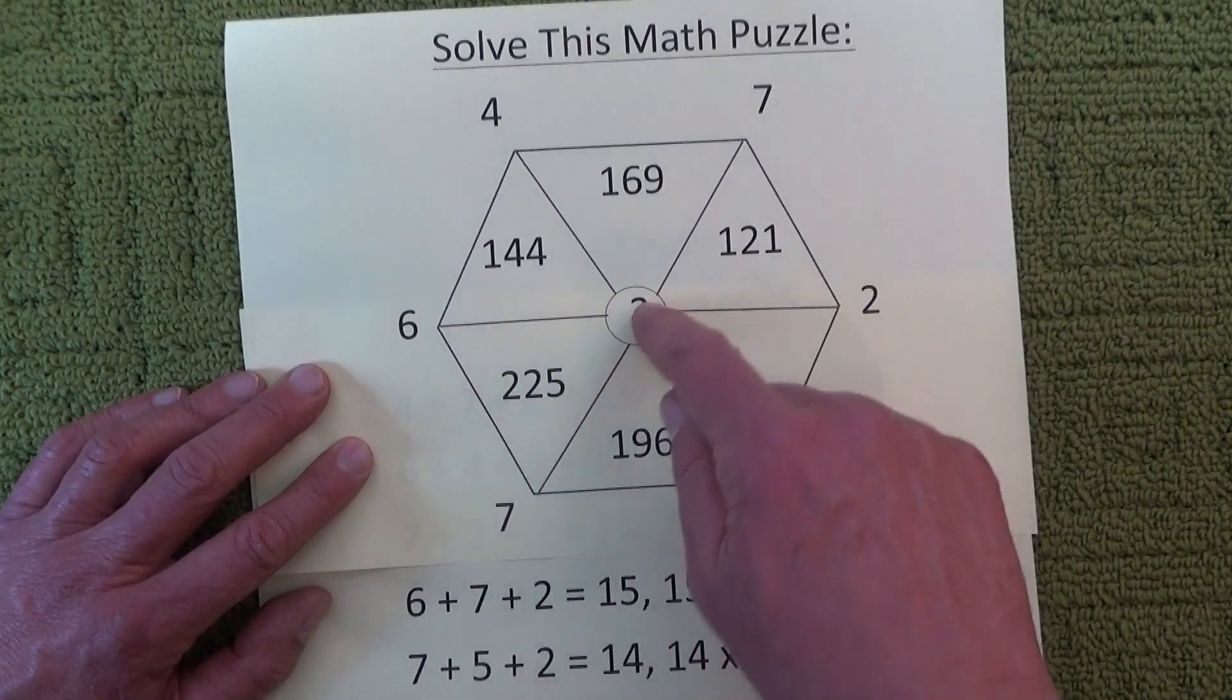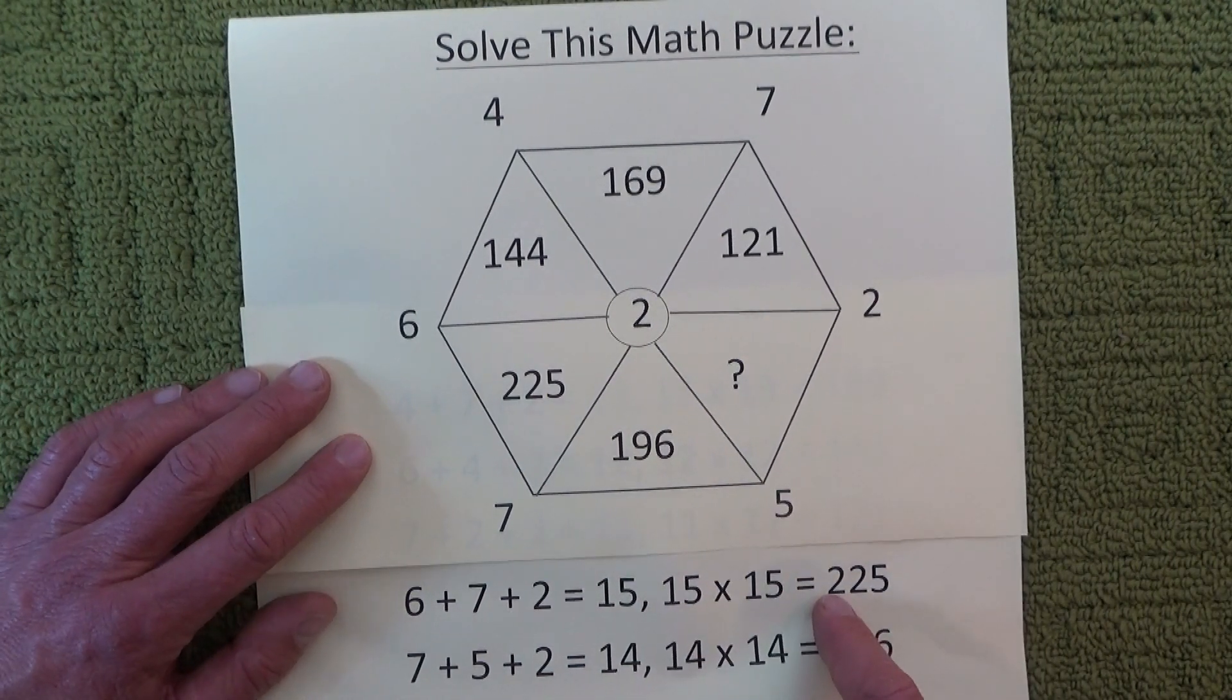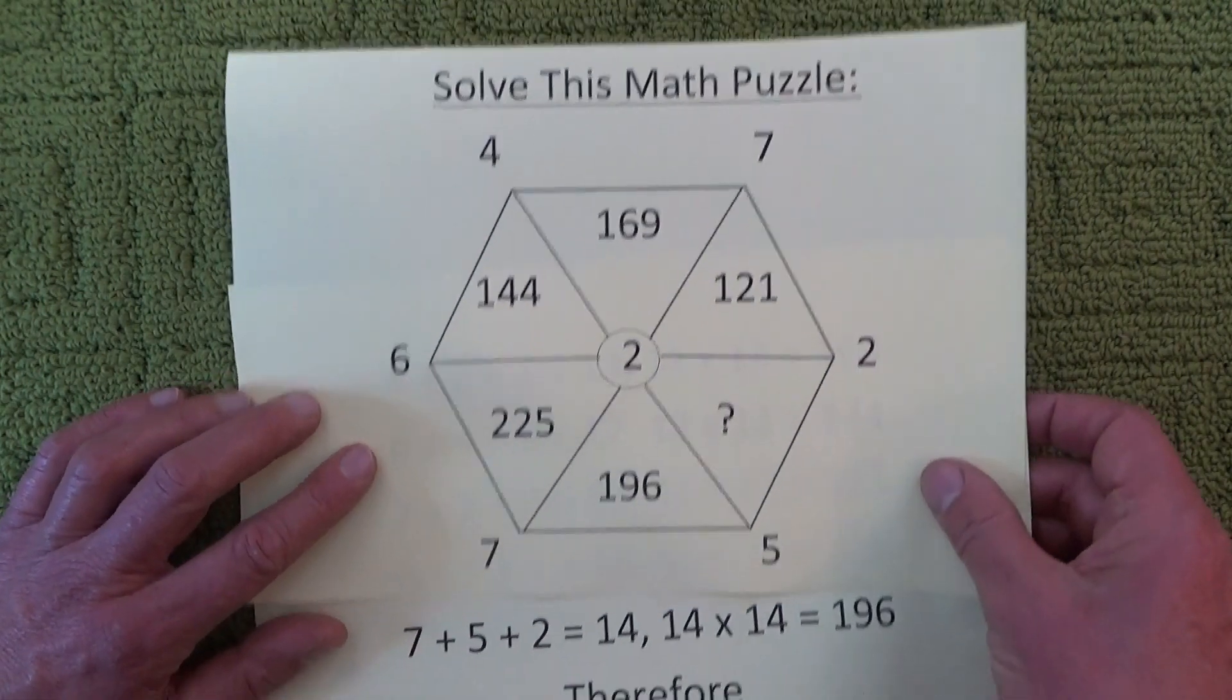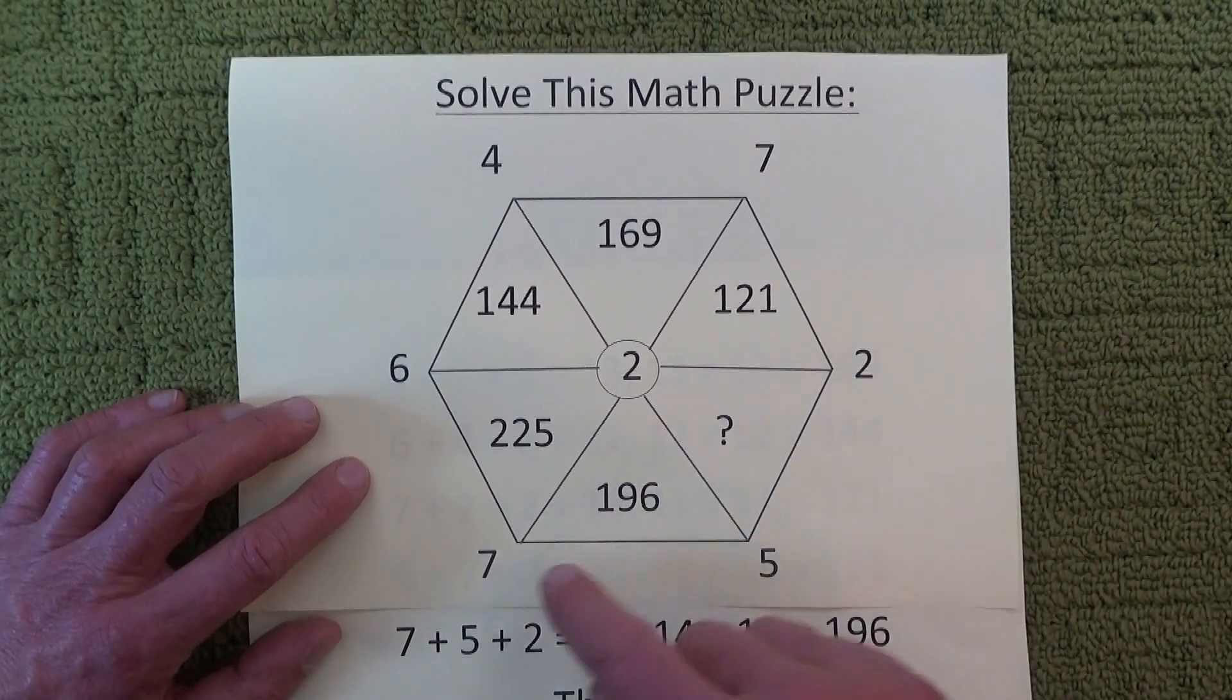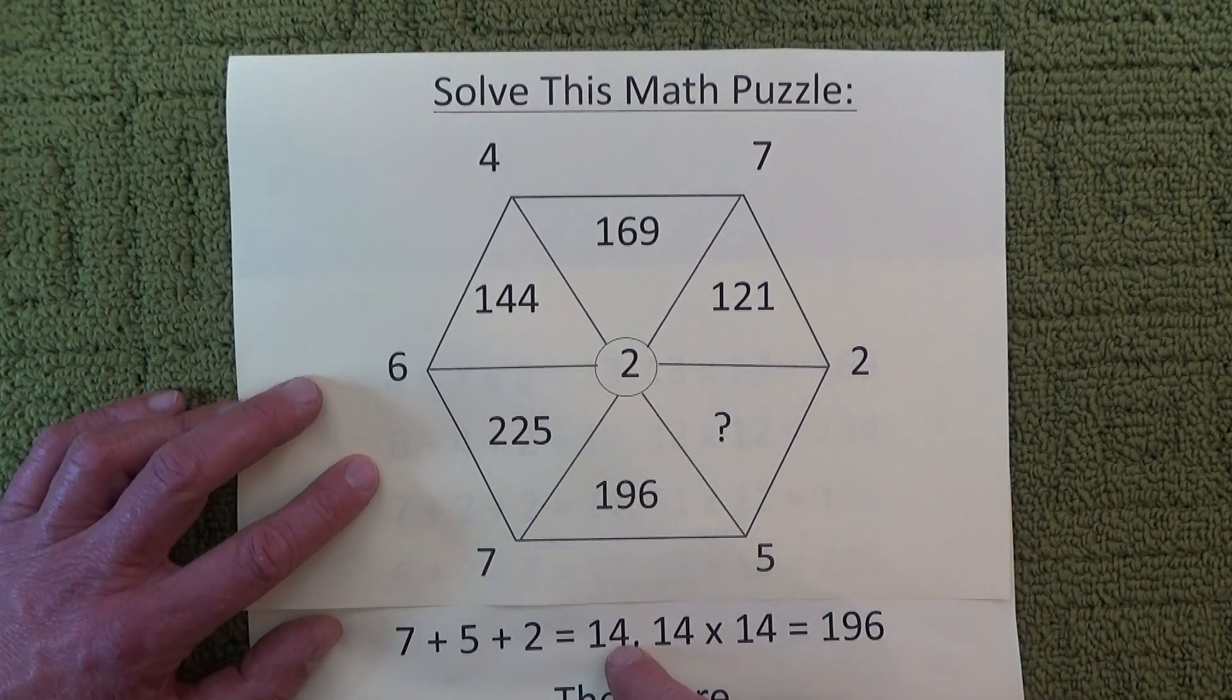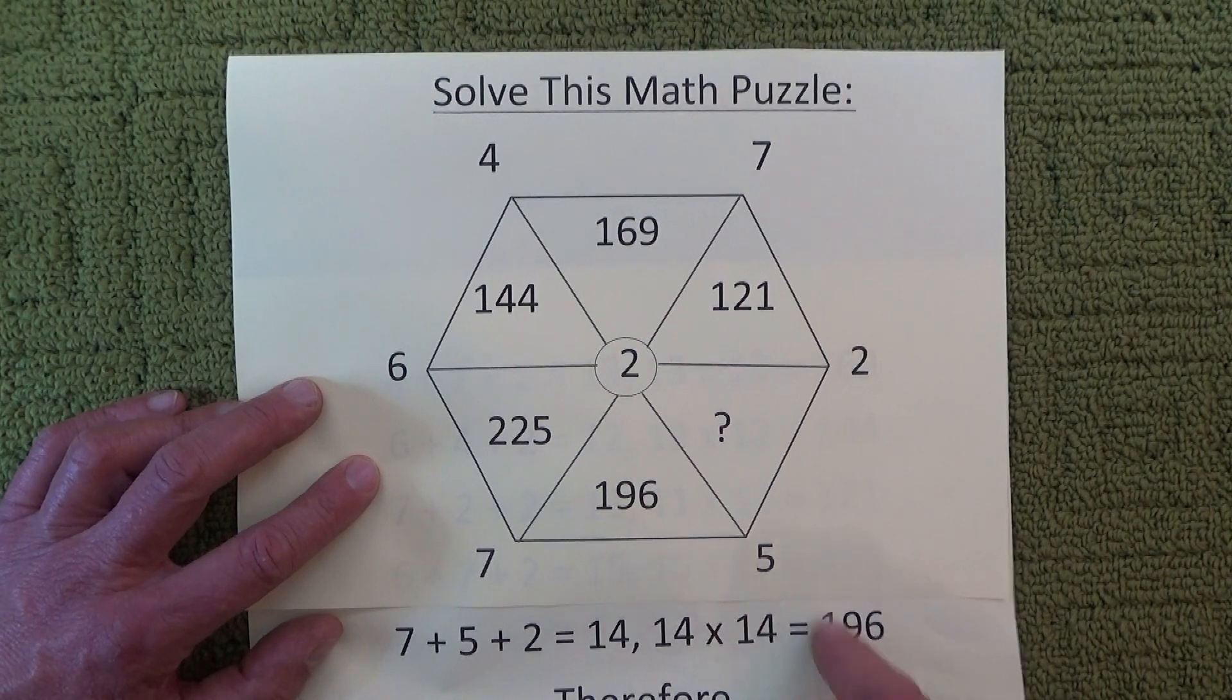And down here, 6 plus 7 plus 2 equals 15, 15 times 15 is 225. And then the bottom is 7 plus 5 plus 2 equals 14, 14 times 14 is 196.